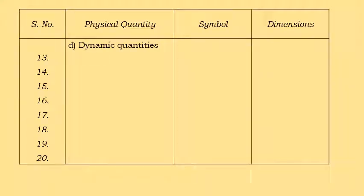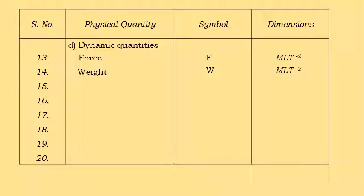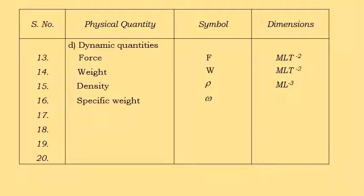Next, dynamic quantities. Force, denoted by F, has dimensions M L T⁻². Weight, W, has dimensions M L T⁻². Density, rho, has dimensions M L⁻³. Specific weight, omega, has dimensions M L⁻² T⁻². Dynamic viscosity or absolute viscosity, mu, has dimensions M L⁻¹ T⁻¹.